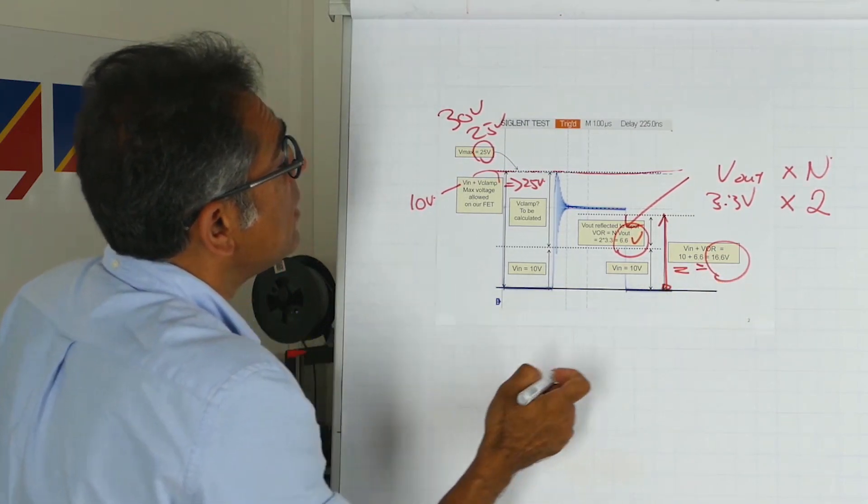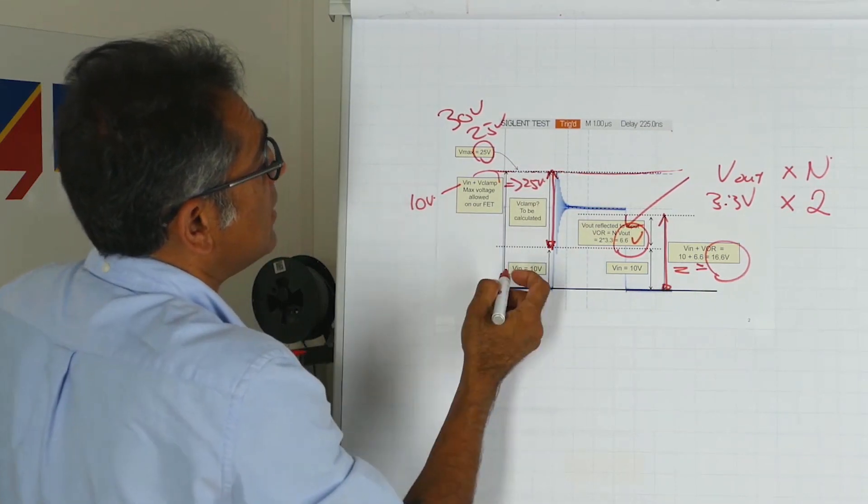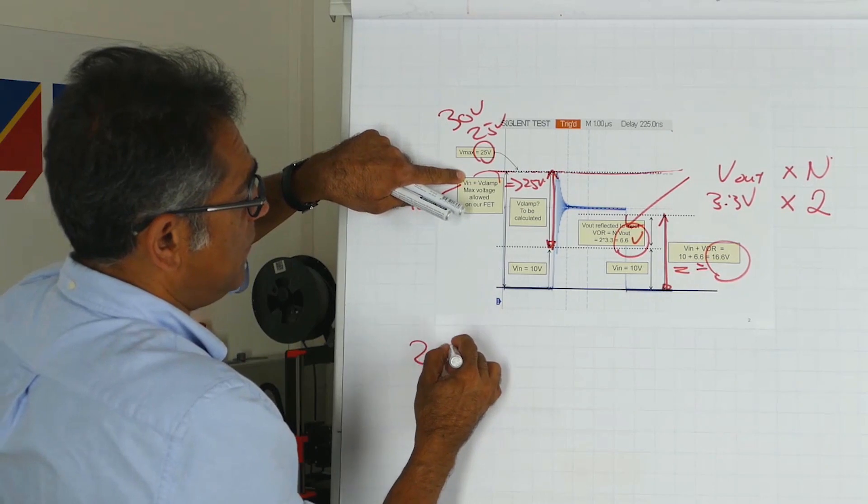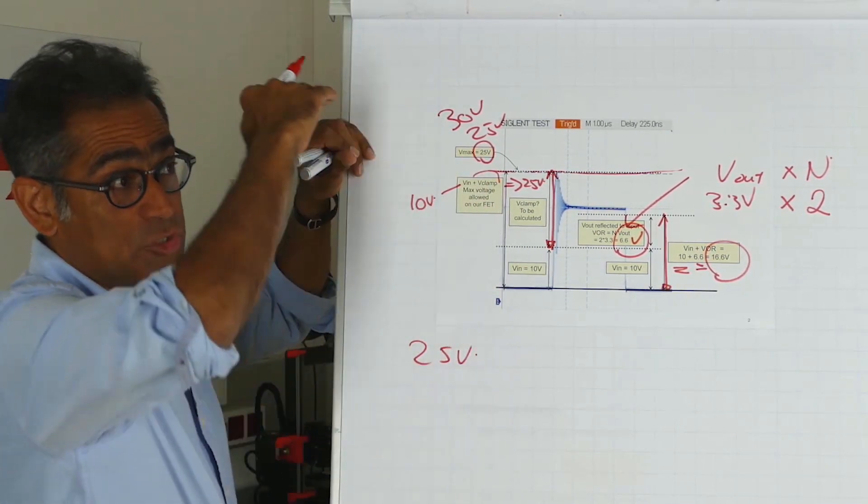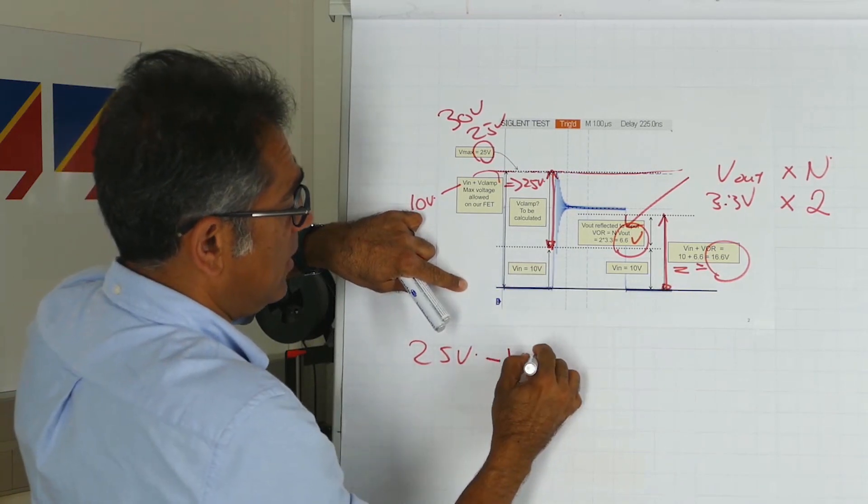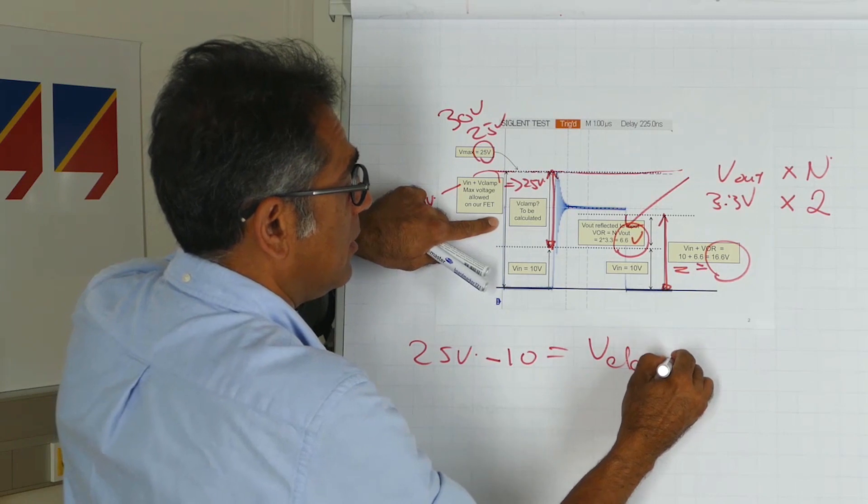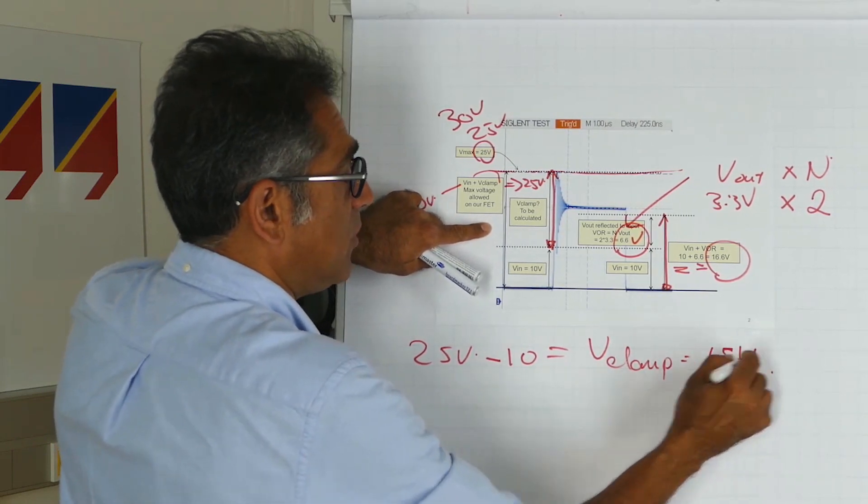So this voltage here is 10 volts plus 6.6 volts, which is 16.6 volts. Now we need to calculate the V-clamp, which is the voltage from there to there. As you can see, V-clamp is 25 volts, this is the voltage that we want to clamp at, minus this 10 volts here, and therefore V-clamp is equal to 15 volts.